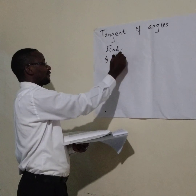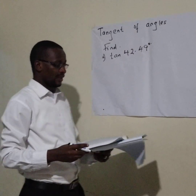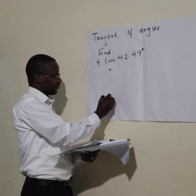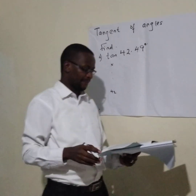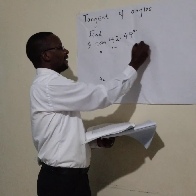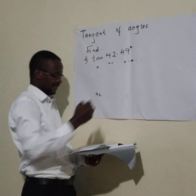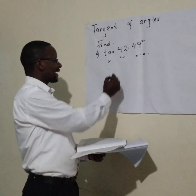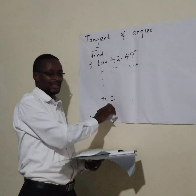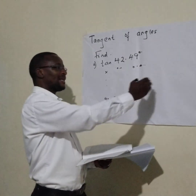Find from tables: tan 42.49 degrees. From your table you have the column marked x. You move all the way down to 42, just as you do in other table readings. Then across the top you have 0.0 all the way to 0.4, so you go to 0.4. Remember that at 0.0 there is a leading '0 point' which may change as you move down, so you must carry that '0 point' forward.